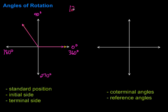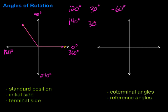Let's look at a few other examples and talk about both coterminal angles and reference angles. We'll work with 120 degrees, which we already did, plus 30 degrees, negative 60 degrees, 140 degrees, 45 degrees, and negative 165 degrees.